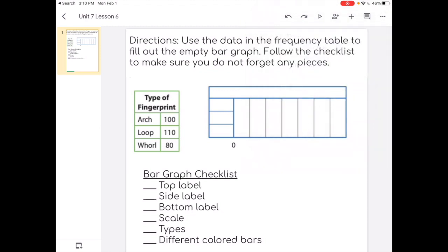So look at the frequency table. It says type of fingerprint and it has three types. Each type has a number that goes with it. So that's the information that we're going to put into the bar graph.